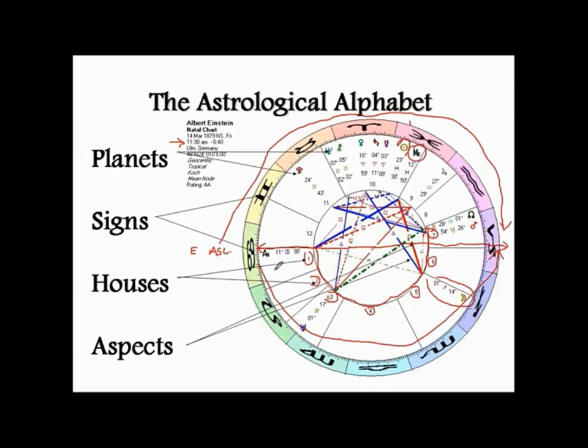The houses are a similar thing to the zodiac. The first house corresponds to the first sign Aries, the second house to Taurus, the third house to Gemini. The houses are the same thing as the zodiac but on a different octave, using different astronomical criteria. The same archetypal concepts are used with both the signs and the houses.